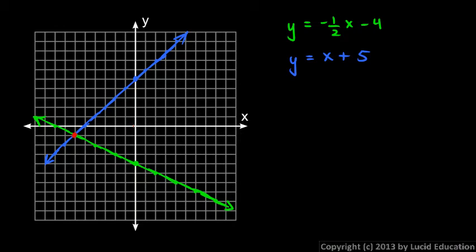And let's see, what is that? Let's count here. 1, 2, 3, 4, 5, 6 to the left. So x is negative 6, and y is negative 1.